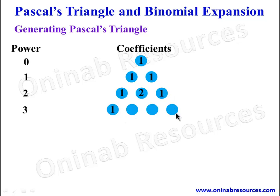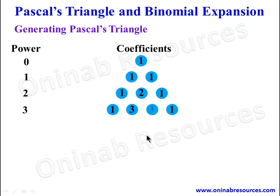For power 3, we have four terms. The first and last coefficients are 1. The second term is the sum of the first two coefficients in the preceding row: 1 plus 2 gives 3. The third term is the sum of the next two: 2 plus 1 also gives 3. So the row is 1, 3, 3, 1.